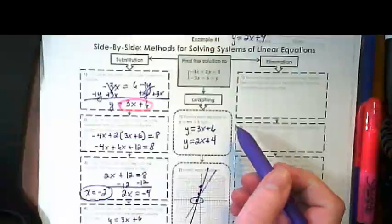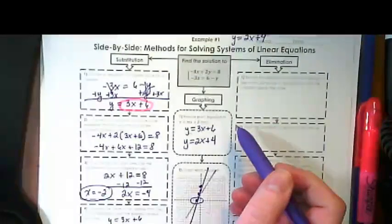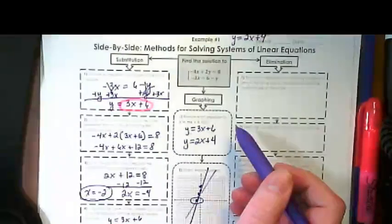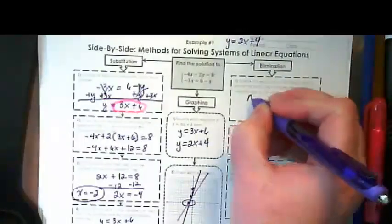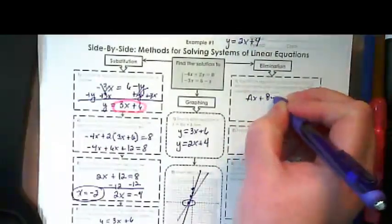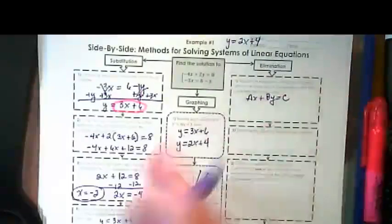And finally, we're going to use elimination. We're going to rewrite the equation so that the x's and y's are on the same side of the equation, and the constants are on the other. In other words, we want this to be an ax plus by equals c form, or standard form.